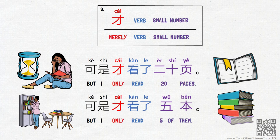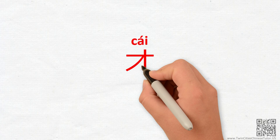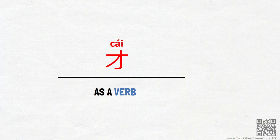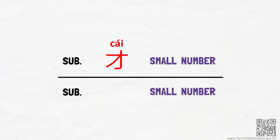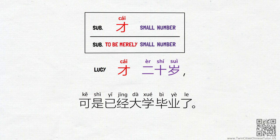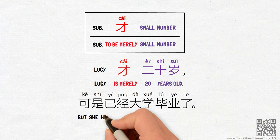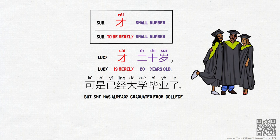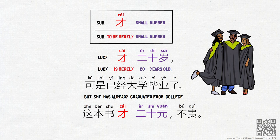Now that we have finished learning how 才 is used as an adverb, let's take a look at how it is used as a verb. Extending from the meaning of 'only' or 'merely' when 才 is used as an adverb, the verb 才 simply means 'to be only' or 'to be merely.' If I tell you Lucy 才二十岁, 可是已经大学毕业了, I am saying, 'Lucy is merely twenty years old, but she has already graduated from college.' If Lucy says 这本书才二十元, 不贵, she means, 'This book is only twenty yuan, it's not expensive.'